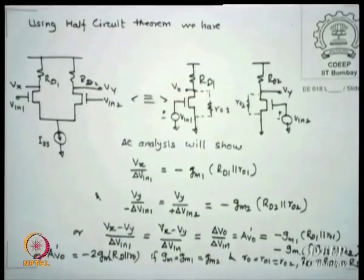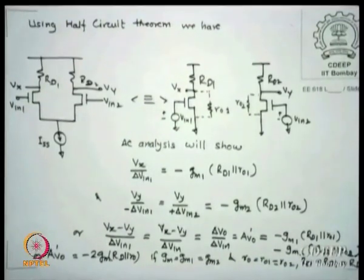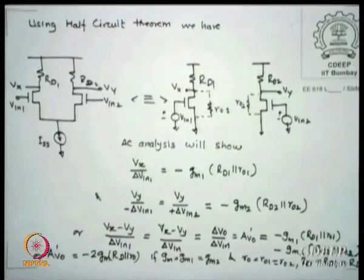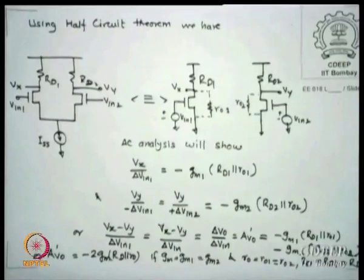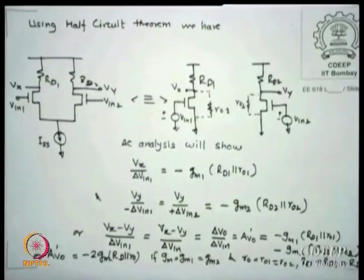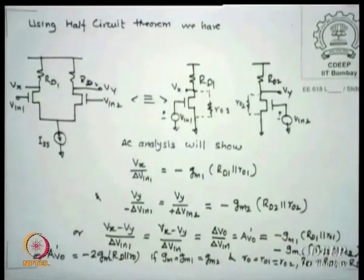A more rigorous second method — which you should read from Razavi's book — is a circuit technique where one input is grounded (Vin2), and the influence of Vin1 on Vo1 and Vo2 is found. Then Vin1 is set to zero and results are superposed to get the net gains. This standard superposition technique is popular but the half-circuit method is simpler when symmetry holds.